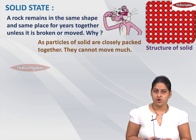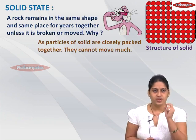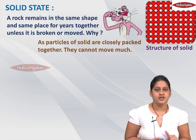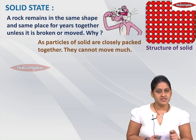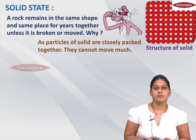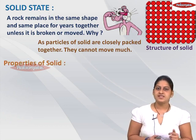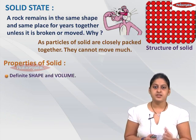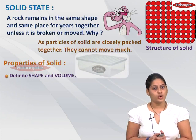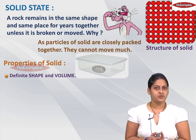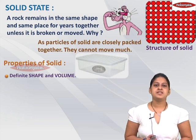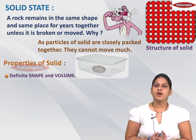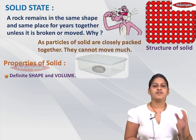Because of the particles being very close to each other, the solid remains in the same shape and same place for years together. As the particles of solid are closely packed together, they cannot move much, and this is why solids get their shape. With the help of these particles, we can list down the properties of solids. The first property is: solids have definite shape and definite volume, because particles being very close to each other cannot move much.